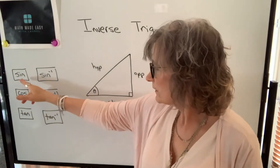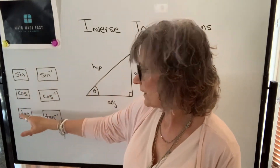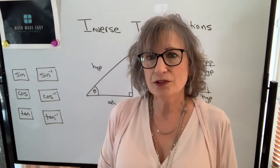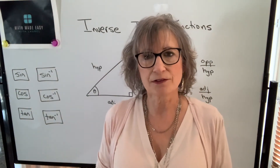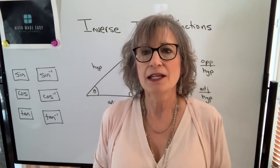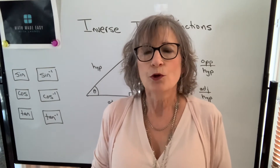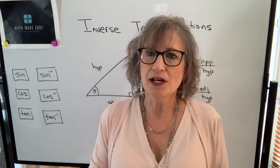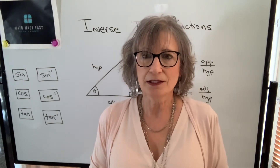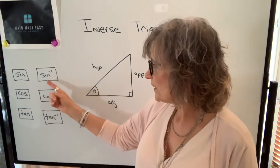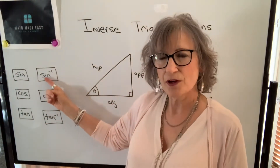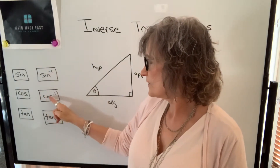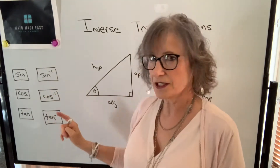Our calculators have the sine, cosine, and tangent functions on them, so we were able to find trig functions for various angles. In this video, we're not going to know the angle. Instead, we're going to know two sides, and we're going to be asked to find the angle. In order to do that, we need to use these functions: sine to the negative one, cosine to the negative one, tangent to the negative one.